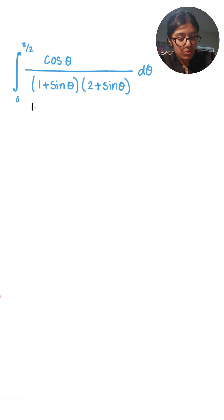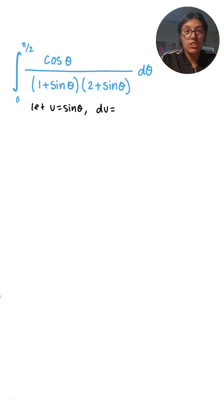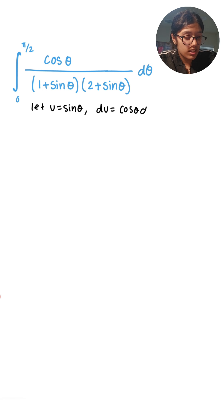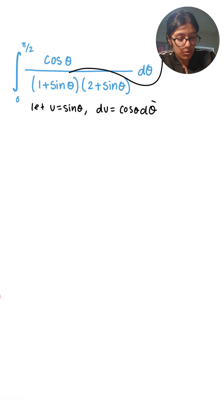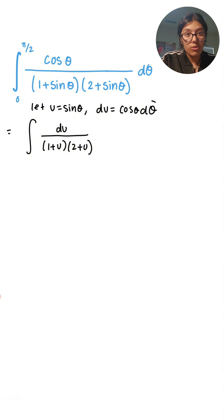Right off the bat, I'm going to let u equal to sin θ, because I know that when I take the derivative of both sides I get du equals cos θ dθ, and that is exactly what we have in the original problem. So I'm going to rewrite this in terms of u.